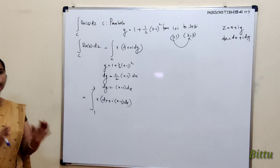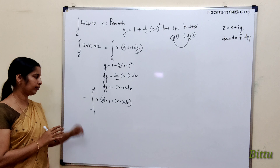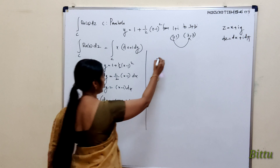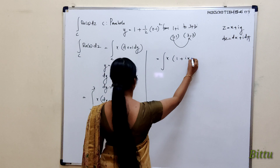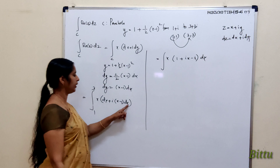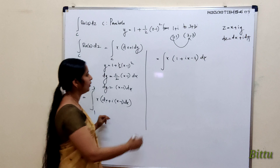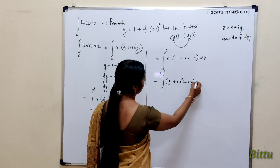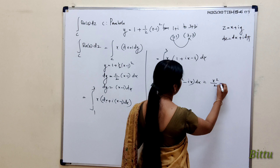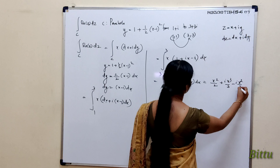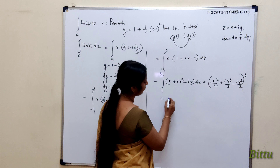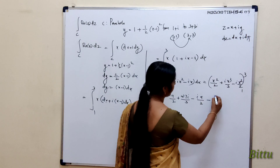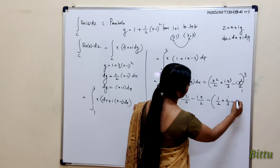Integrating: x²/2 + ix³/3 − ix²/2, evaluated from 1 to 3. Putting in the limits — upper limit: 9/2 + 27i/3 − 9i/2; lower limit: 1/2 + i/3 − i/2. Simplifying: (9/2 − 1/2) = 8/2 = 4 for the real part. For the imaginary part: 27i/3 − 9i/2 − i/3 + i/2, taking LCM 6: (54i − 27i − 2i + 3i)/6 = 28i/6.